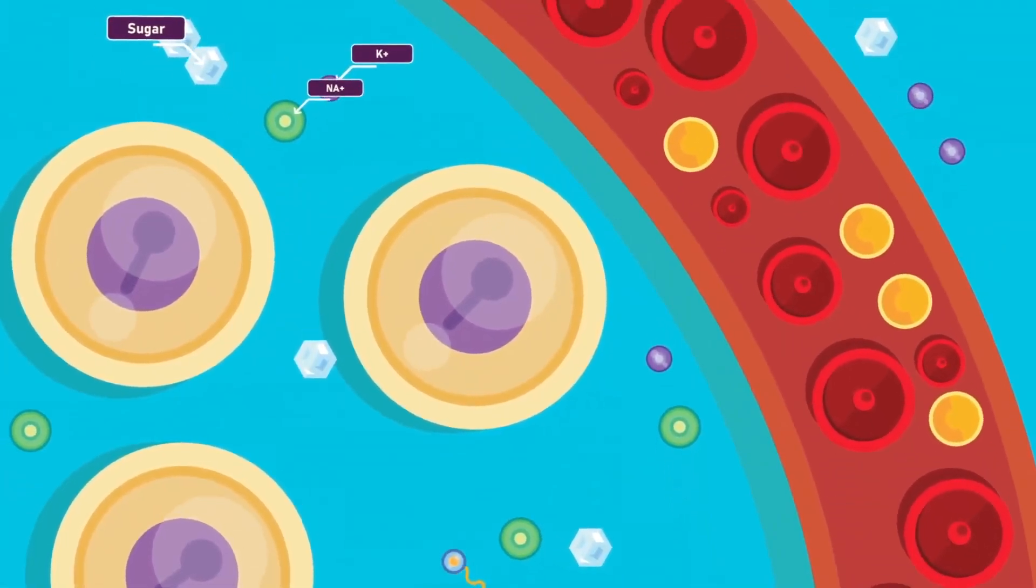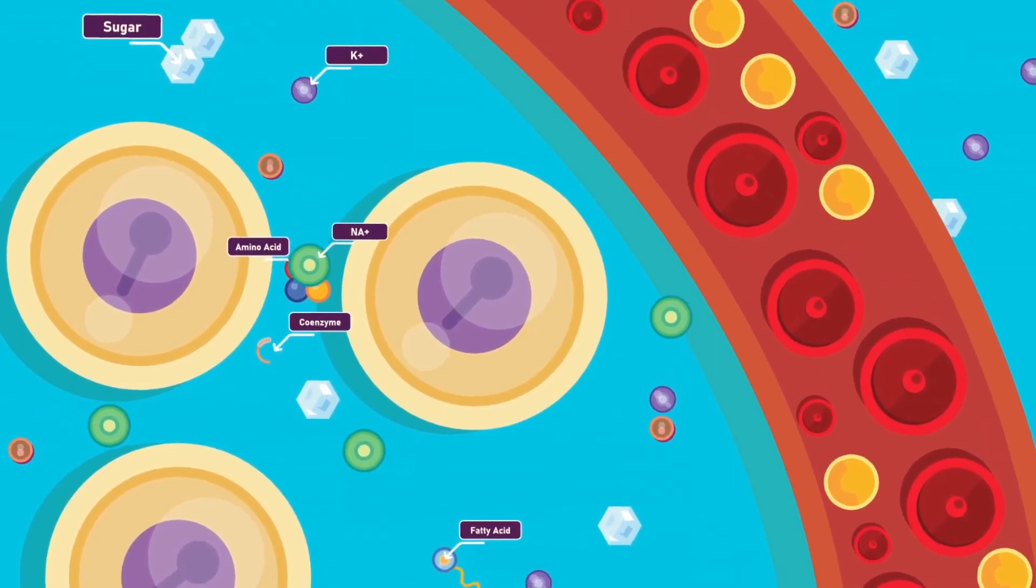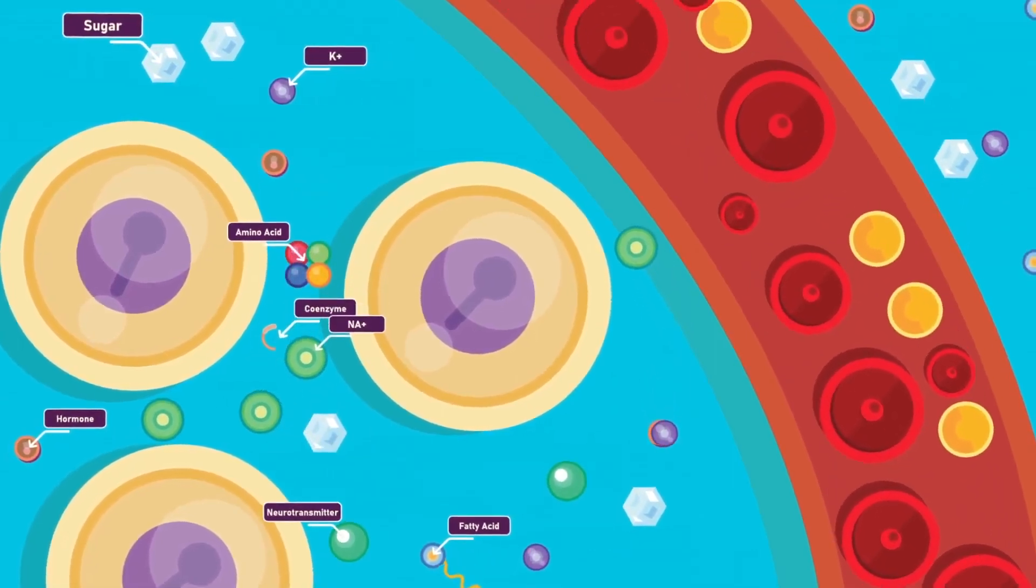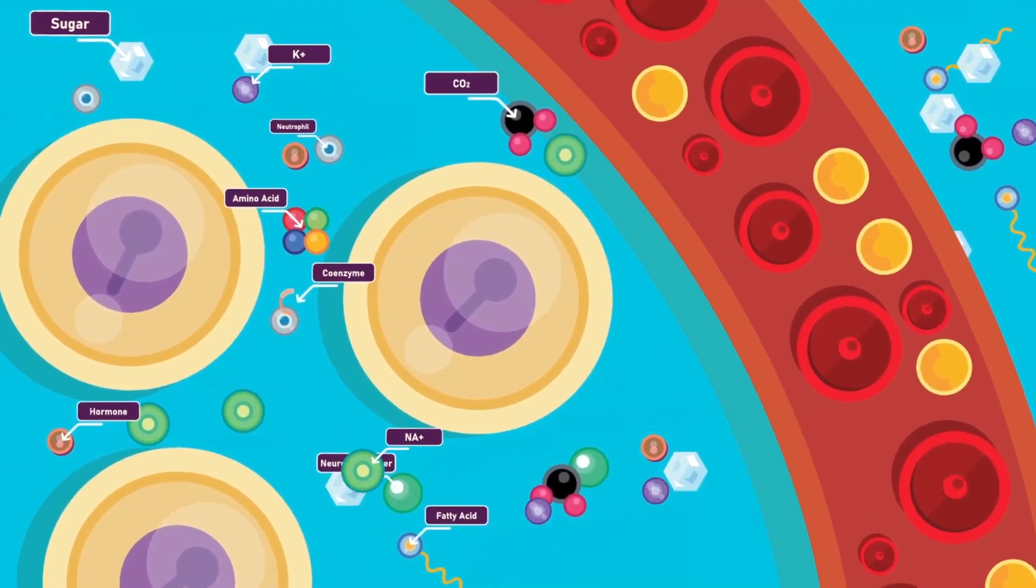Interstitial fluid consists of a water solvent containing sugars, salts, fatty acids, amino acids, coenzymes, hormones, neurotransmitters, white blood cells and cell waste products.